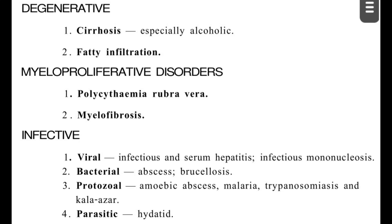Infective causes for liver enlargement are very common. Viral causes include serum hepatitis and infectious mononucleosis, which involve the liver and cause enlargement secondary to inflammation. Bacterial causes include abscess and brucellosis. Protozoal infections include amoebic liver abscess, malaria, and Kala-azar. Parasitic infection — particularly hydatid cyst — produces small or large cysts within the liver parenchyma, resulting in liver enlargement.